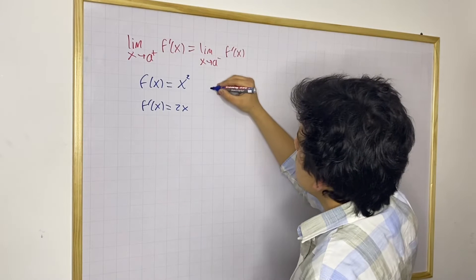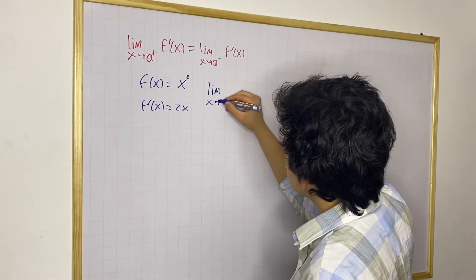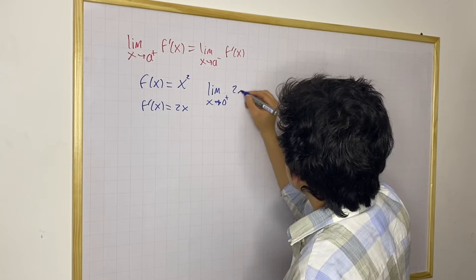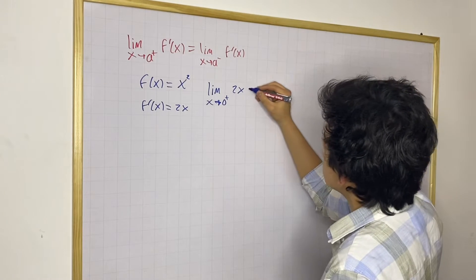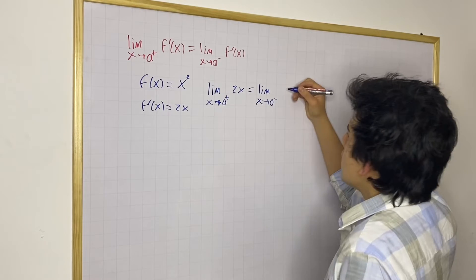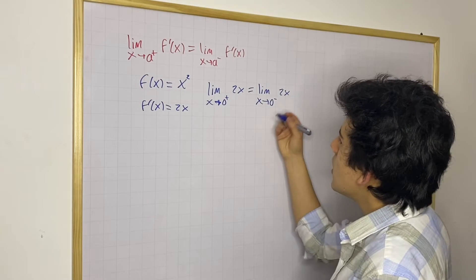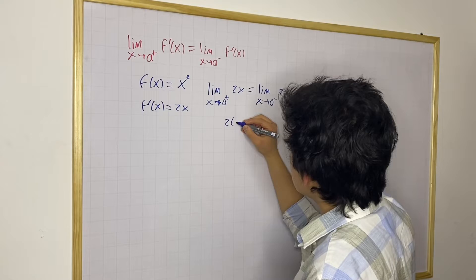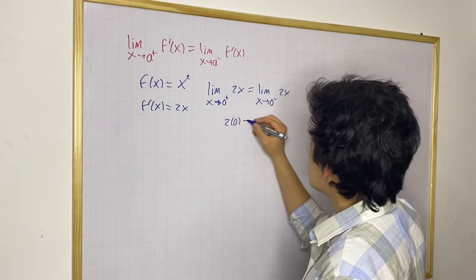Let's see what happens. We say the limit as x approaches 0 from the right side for the function 2x — remember we need to use f prime, and f prime equals 2x — should be equal to the limit as x approaches 0 from the left side for 2x. We can simply say this is the same as multiplying 2 times a number very close to 0, so we get 2 times 0.